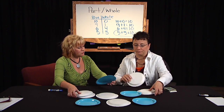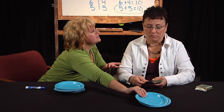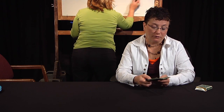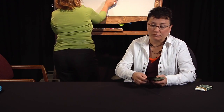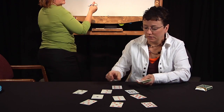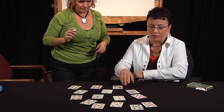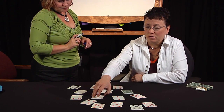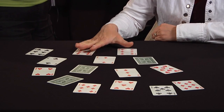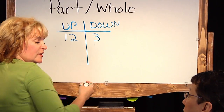You can also do it with cards. Let's work on the number fifteen instead of ten. Just put fifteen cards down: one, two, three, four, five, six, seven, eight, nine, ten, eleven, twelve, thirteen, fourteen, fifteen. Now turn some of them upside down. I know there are twelve face up and three face down — so that's how you could work with bigger numbers.